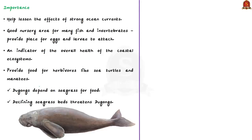Seagrasses help lessen the effects of strong ocean currents, providing a place for eggs and larvae to attach, making them a good nursery area for many fish and invertebrates. Since seagrasses produce energy through photosynthesis, they are very sensitive to water quality — only when water is clear and sunlight can penetrate can photosynthesis occur. This is why seagrasses directly link to water quality and are considered an indicator of overall health of coastal ecosystems.